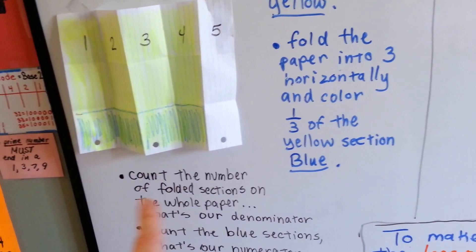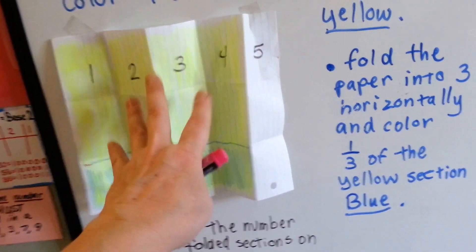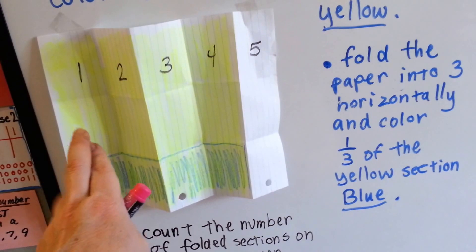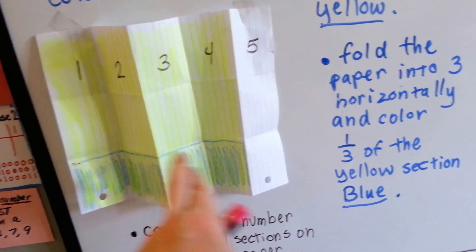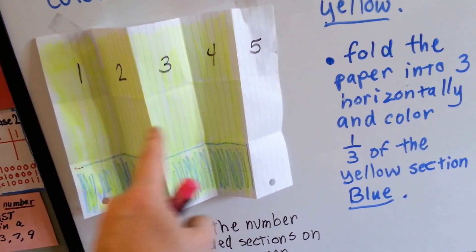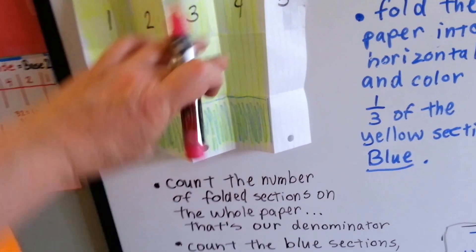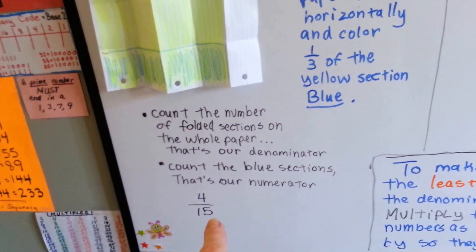Now, I count the number of folded sections on the whole paper. So there's 5, 10, 15 little squares. And how many of them are colored blue? Just 4. 4 fifteenths.